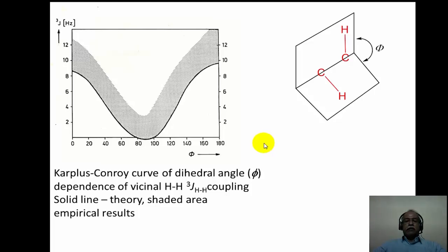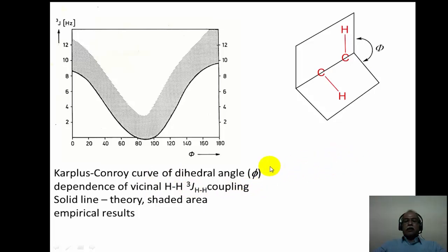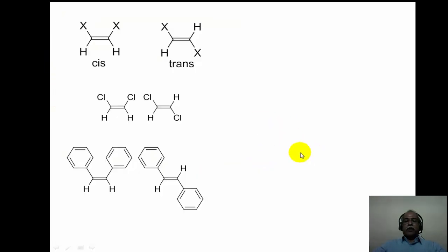We will now move on to using J values for the determination of stereochemistry. Stereochemical aspects arise from the orientation of the molecule, essentially decided by the dihedral angle when you have vicinal hydrogens. One can use vicinal coupling constants as a tool for determining stereochemistry. This is described by the Karplus-Conroy curve, showing the dihedral angle dependence of the vicinal (3-bond) coupling constant.